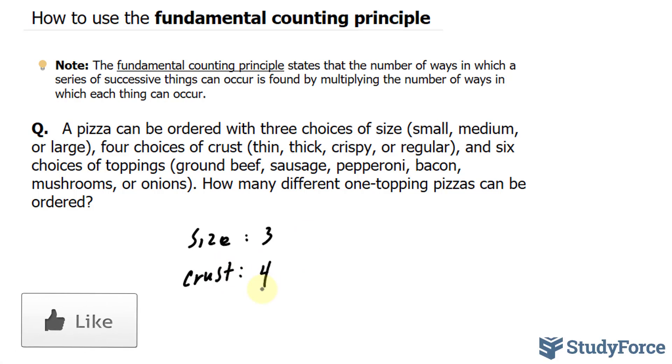And six choices of toppings: ground beef, sausage, pepperoni, bacon, mushrooms, or onions. So I'll write down toppings, six. How many different one-topping pizzas can you order?